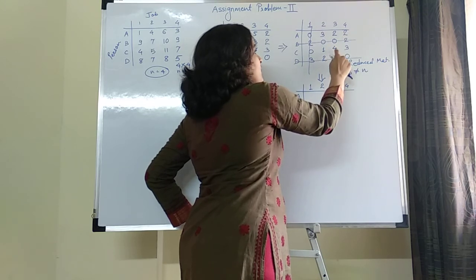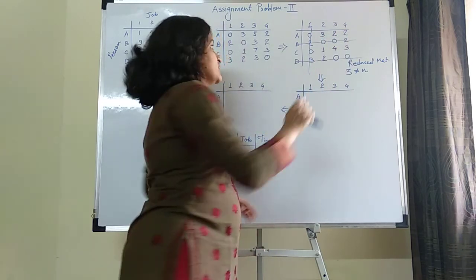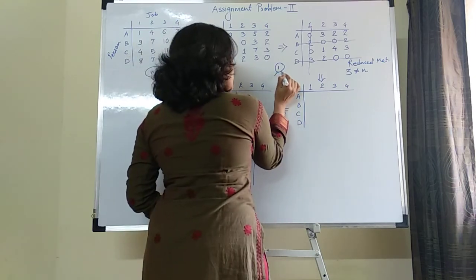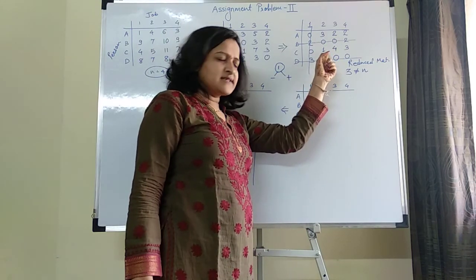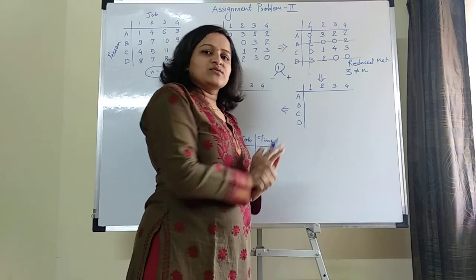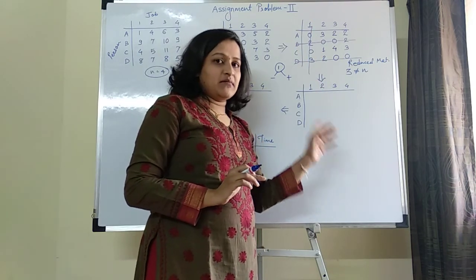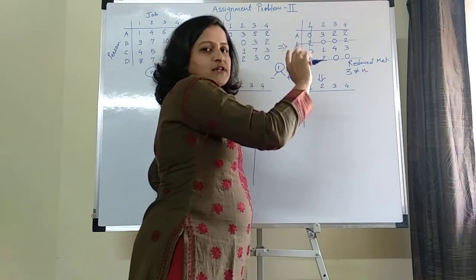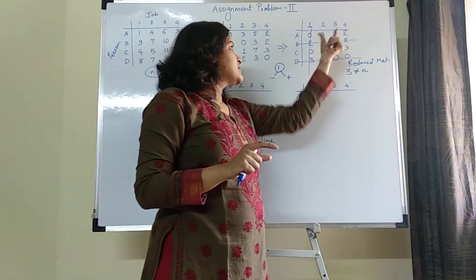Find out the smallest number from all the uncovered numbers. The uncovered numbers are 3, 2, 2, 1, 4, 3 — and 1 is the smallest. Now you have to perform two operations: subtract 1 from the uncovered numbers, and add 1 at intersection points. The numbers which are not covered by any line — not even vertical, not horizontal — should have 1 subtracted.